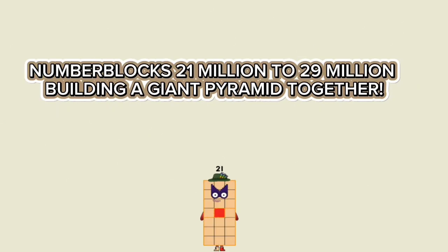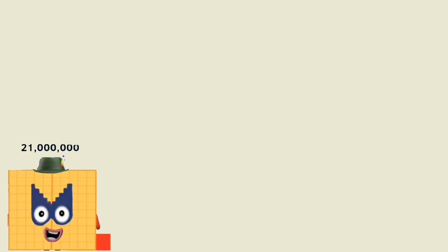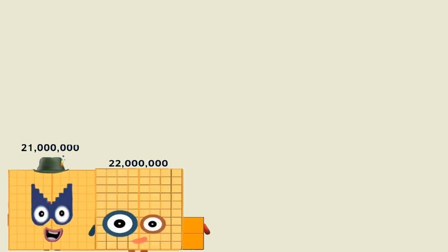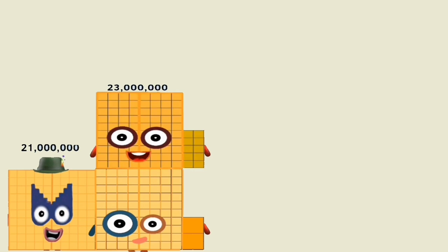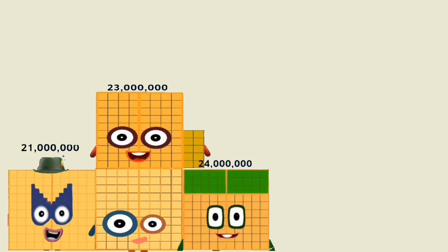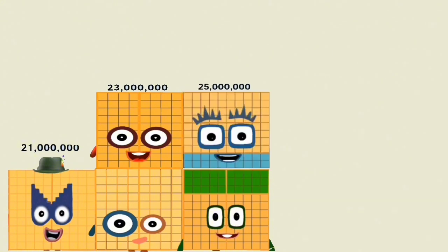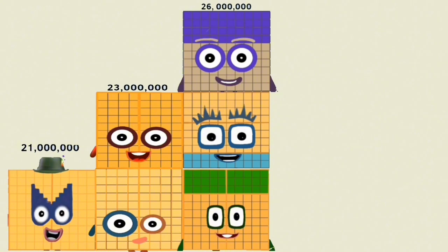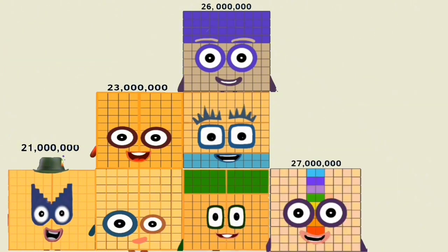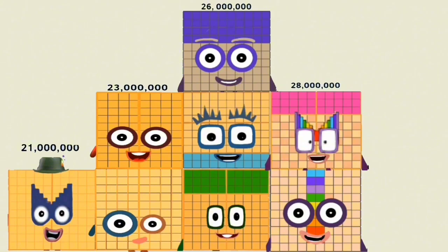Number blocks 21,000,000,000 to 29,000,000 building a giant pyramid together. Negative 21,000,000. Negative 22,000,000. Negative 23,000,000. Twenty-six million. Twenty-seven million. Twenty-eight million. Twenty-nine million.